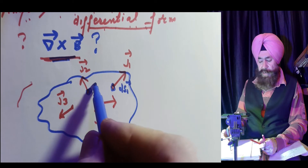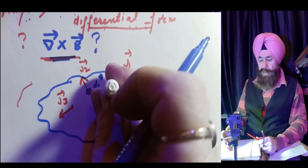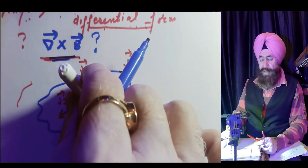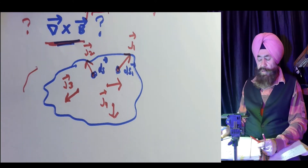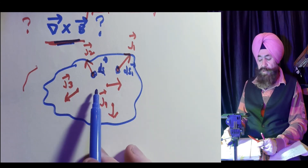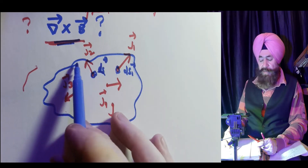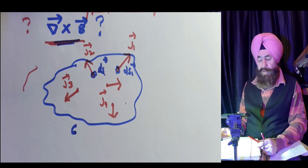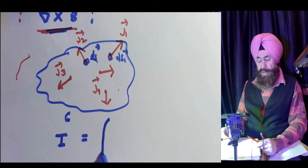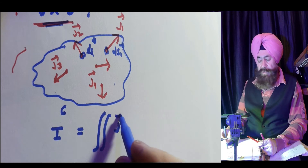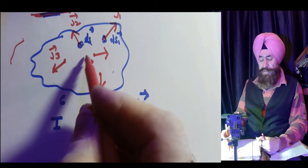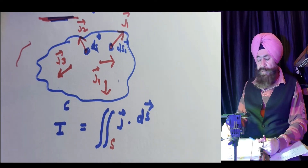The area vector is always perpendicular to the surface, but the current density may point in any direction. Now, the question is: what is the total current through this surface, which is bounded by a curve C? Let the total current be I. Current may be written as the surface integral of J vector dot dS vector through surface S, because it is a surface integral.